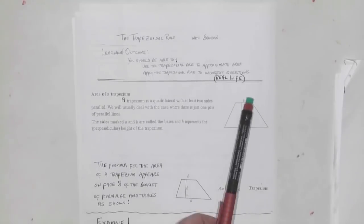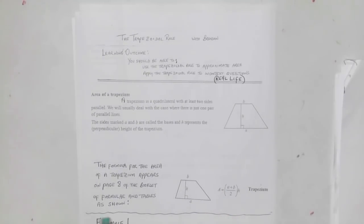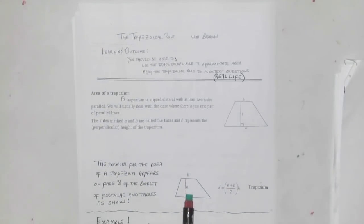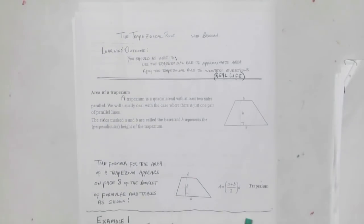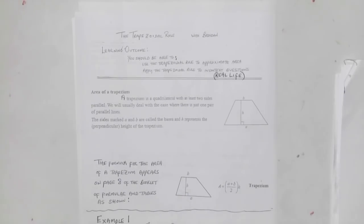The formula for the area of a trapezium appears on page 8 of the booklet of formulas and tables. The area is (A + B) over 2 times H, where A and B are the two lengths of the parallel lines and H is the perpendicular distance between them.